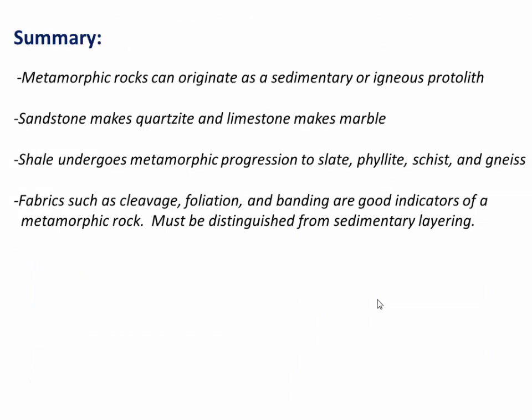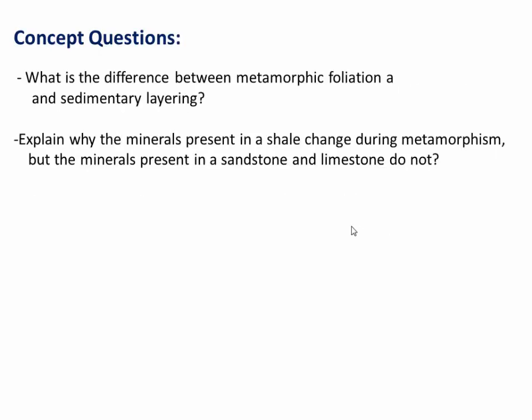In summary, metamorphic rocks can originate as either a sedimentary or an igneous protolith. Classic examples include sandstone, in which quartz is recrystallized to make quartzite, and limestone, in which calcite is recrystallized to make marble. Shale is a different example: because its clay minerals are unstable, it progresses from slate to phyllite to schist to gneiss as it grows a variety of new minerals. Metamorphic rocks can often be identified by fabrics such as cleavage, foliation, or banding, which need to be distinguished from sedimentary layering. Thanks for listening, and good luck identifying those rocks!